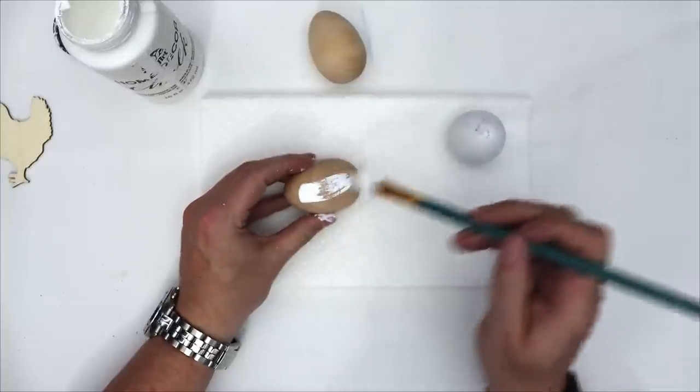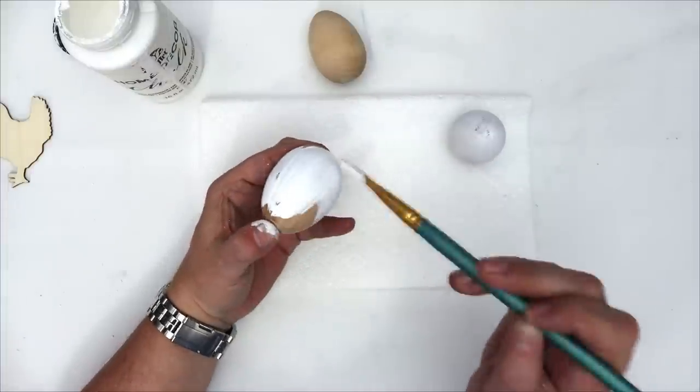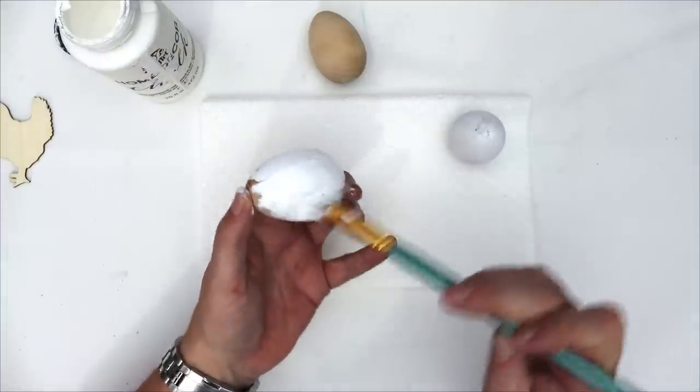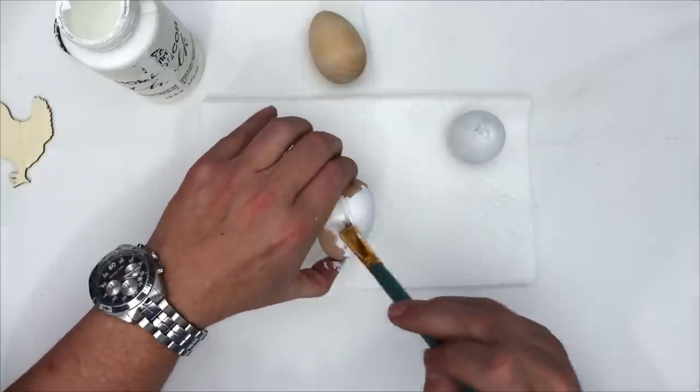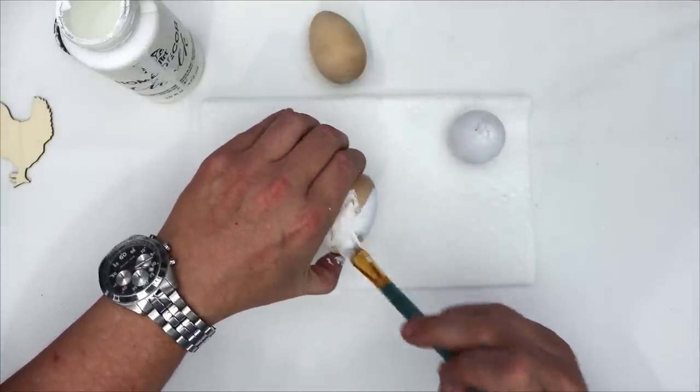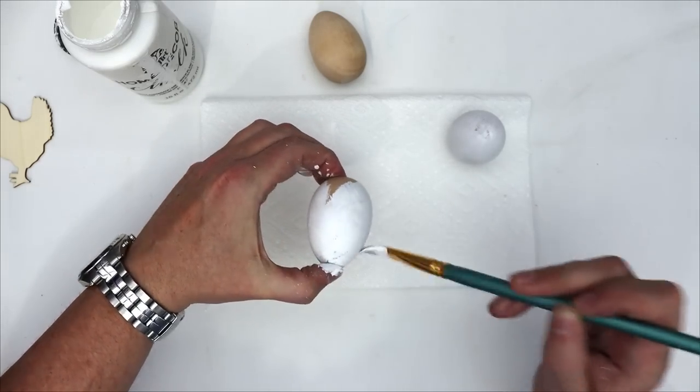So if you guys know of a way to paint these eggs without having them roll around all over the place, please let me know in the comments below because I would love to figure that out if I work with any more wooden eggs in the future.